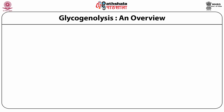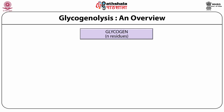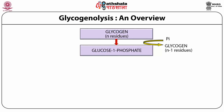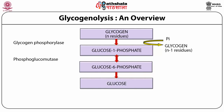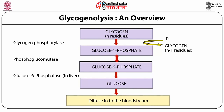Glycogen present in the cytoplasm in the form of granules is converted into glucose 1-phosphate with the help of glycogen phosphorylase. This glucose 1-phosphate is converted into glucose 6-phosphate by phosphoglucomutase. In the liver, glucose 6-phosphate is converted into free glucose with the help of glucose 6-phosphatase, and this glucose ultimately diffuses into the bloodstream. Skeletal muscle glycogen is used only for muscular activities, while liver glycogen supplies energy for the rest of the body.